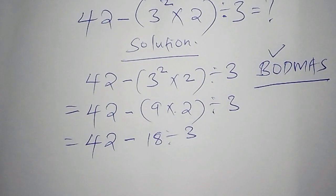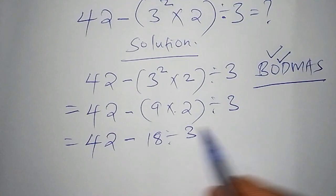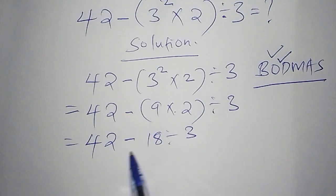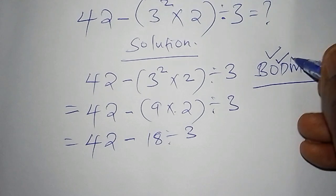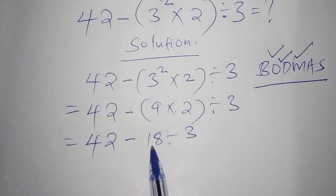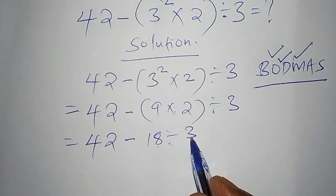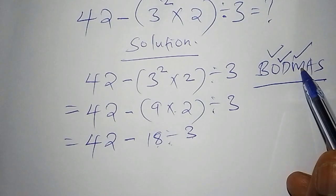Our next step that we are going to do, we are going to work out O. O means of. In this particular problem, there is no of. D means division. So don't make a mistake of saying we have 42 subtract from 18. Don't work out this one first. We need to work out 18 divided by 3 first according to the order of operations.